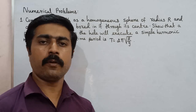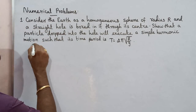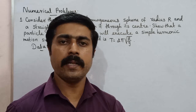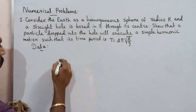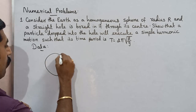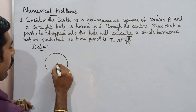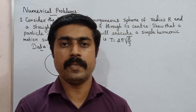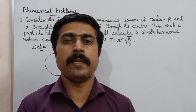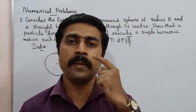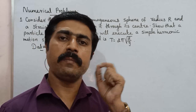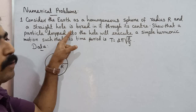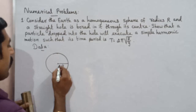It is very simple. Here we have a specific problem: a homogeneous sphere of radius capital R. A straight hole is bored in it through its center. This is the center, center O.